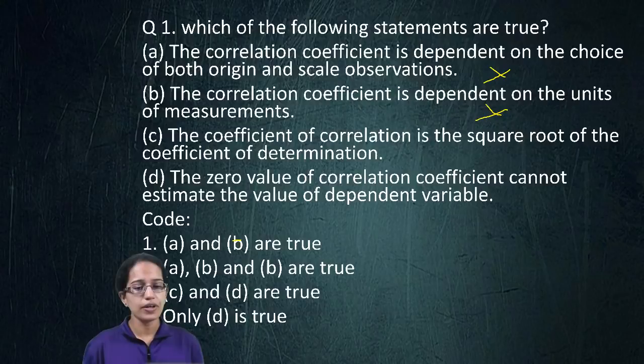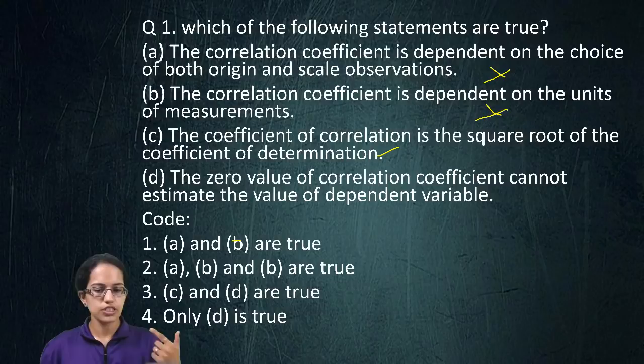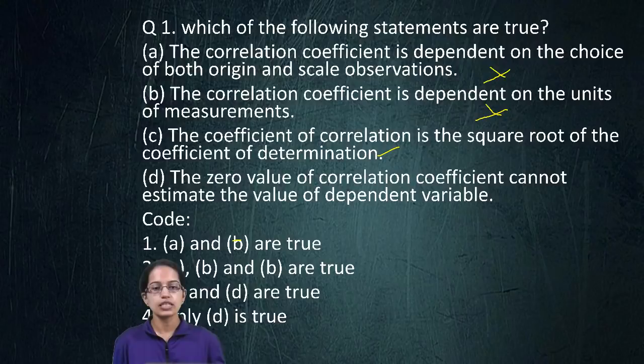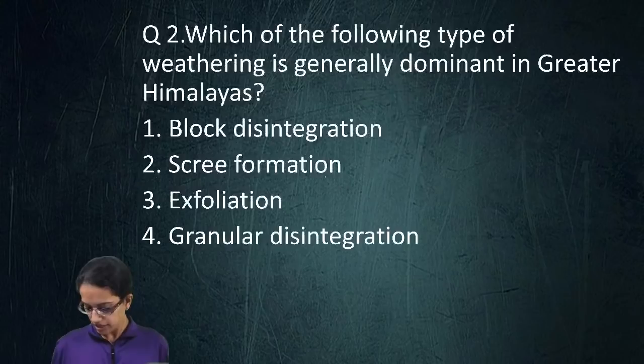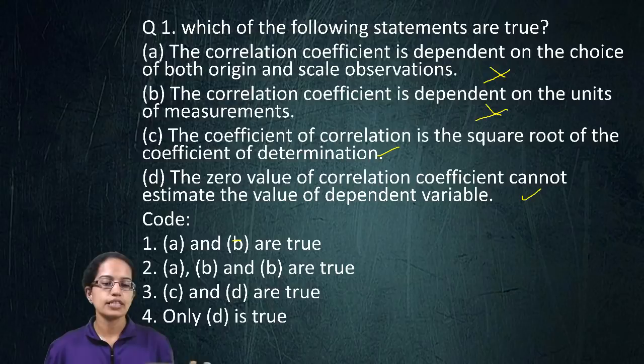However, when I say coefficient of determination, it is the square of the correlation coefficient. A zero value of the correlation coefficient cannot estimate the value of the dependent variable — that is correct, because if there is no relation between the two things, if one increases, I cannot say about the other. Therefore, I cannot estimate the value of the dependent variable. So C and D are the correct options here.